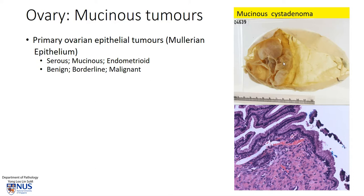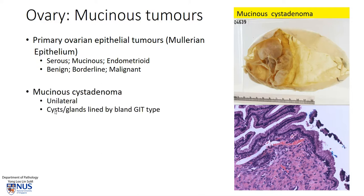This is an example of a benign mucinous cystadenoma. These are usually unilateral, and what we see are cysts that are lined by bland gastrointestinal type mucinous epithelium with quite abundant cytoplasmic mucin. And here you can see the cyst lining — the nuclei are all very basal, and it's a single layer of mucinous epithelium.